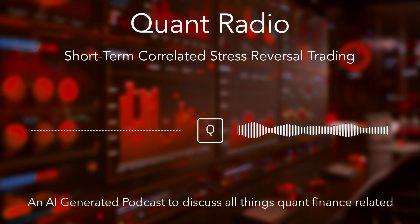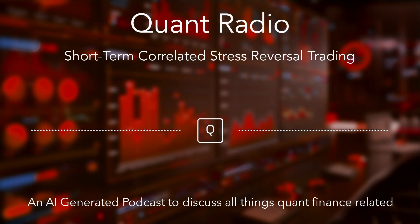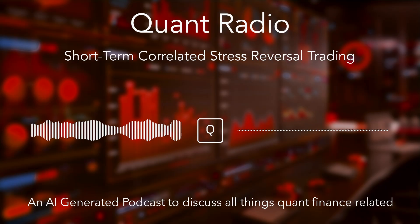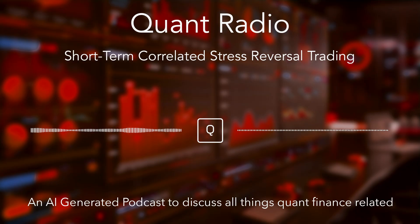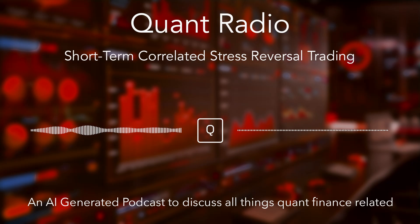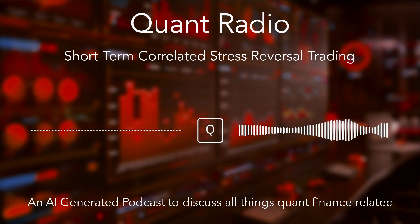It suggests you don't need a huge market crash. It's the correlation — the fact that they're moving together in that specific way, even with relatively small moves — that carries the signal. It's quite subtle. That is fascinating. It's about the pattern, not just the size of the panic. So we know what triggers this signal. Once you get that signal, what's the actual trade? What do you do?